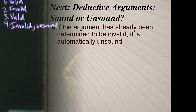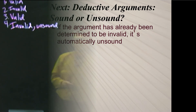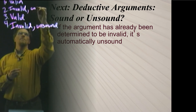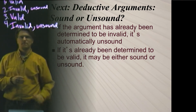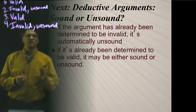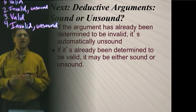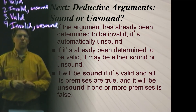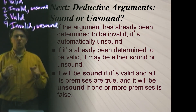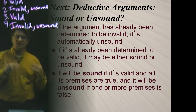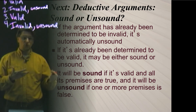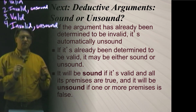If the argument has already been determined to be valid, it could either be sound or unsound — and this is where we have to think a little bit. A deductive argument will be sound if it is valid and all of its premises are true in reality. At this level of evaluation, we're no longer going to assume that anything is true; we are now going to ask if it is really true. A valid deductive argument will be unsound if one or more of its premises is false.